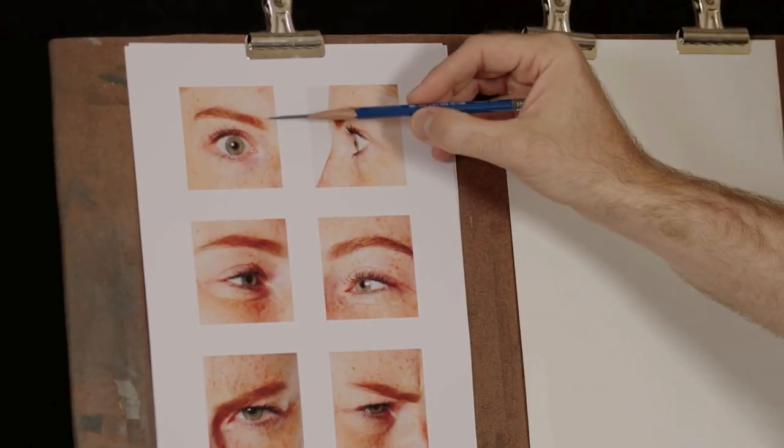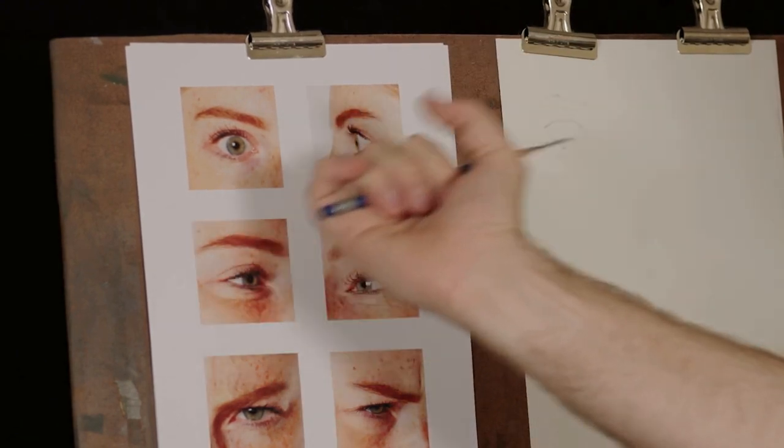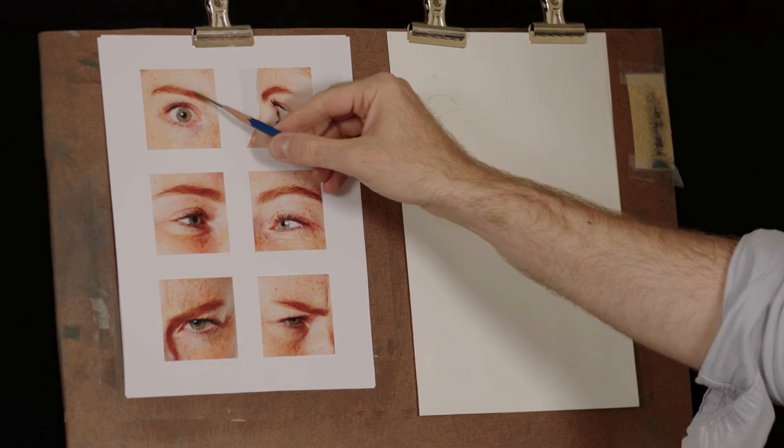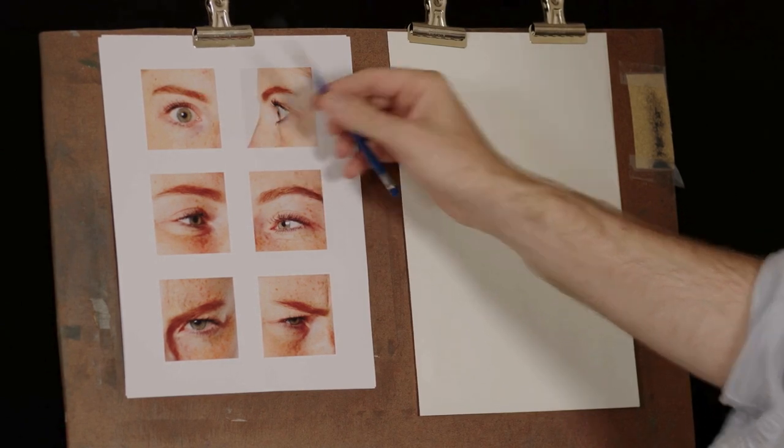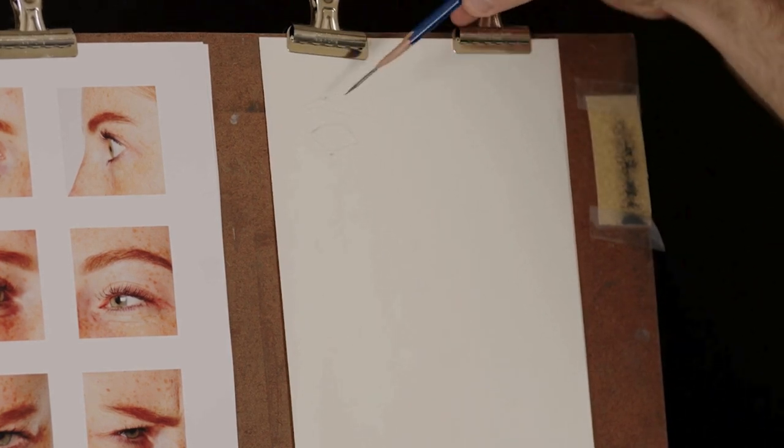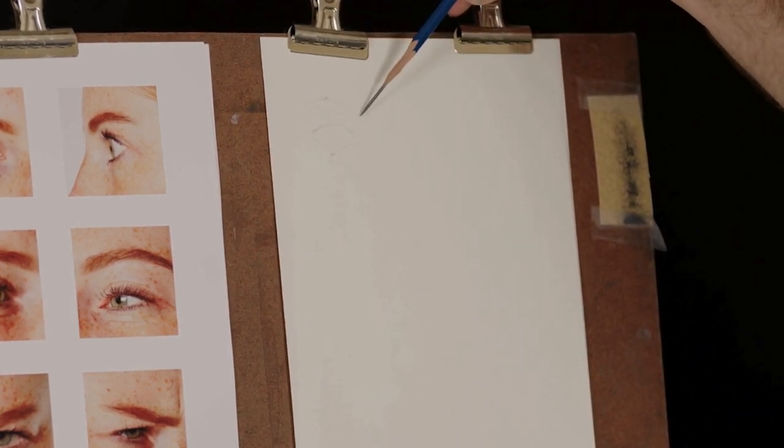Now one thing I notice is that the eyebrow goes to this side of the eye. So I know that if I end the eyebrow here, it's too short. We're going to start using just checks for ourselves like that as we work to keep our drawings accurate.